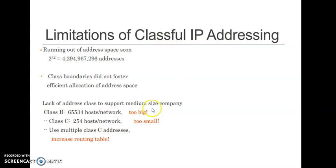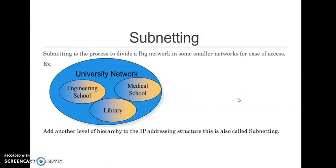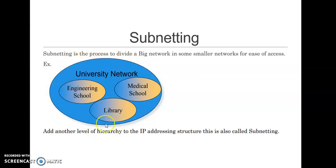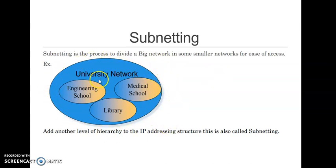There was a need to develop a technique called Classless IP Addressing. Classless IP Addressing also supports subnetting. Subnetting is the process of dividing a large network into smaller networks for ease of access. For example, in a University Network, there are three sub-networks: one for the Engineering School, one for the Medical School, and one for the Library. For the outside world it appears as one network, but internally it is divided into subnetworks.